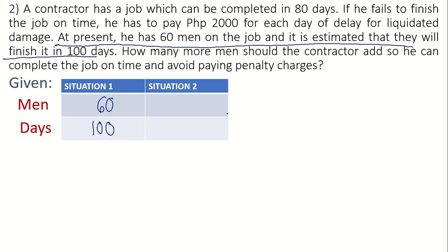For situation two, we continue reading: how many more men should the contractor add to complete the job on time? 'On time' means 80 days, so we put 80 here. The number of days for situation two is 80.